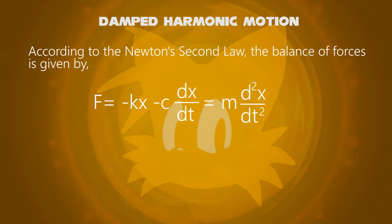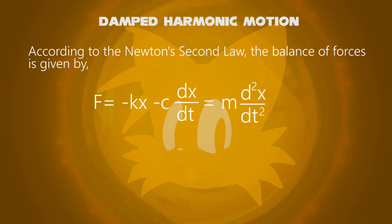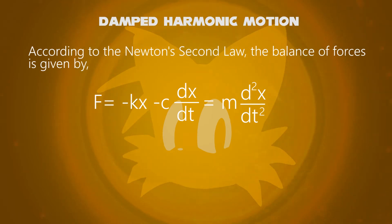As discussed earlier, x is a distance, dx/dt is the velocity, and d²x/dt² is the acceleration.